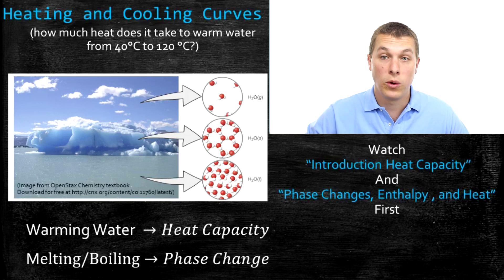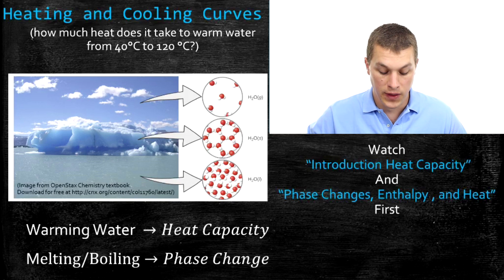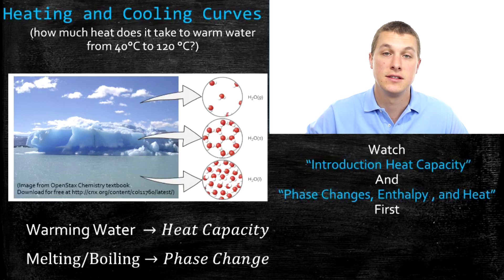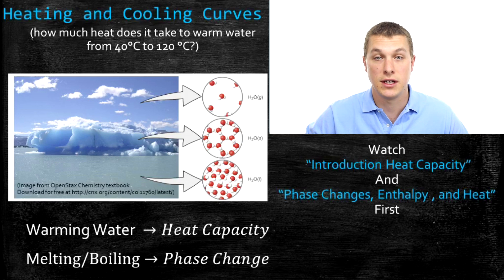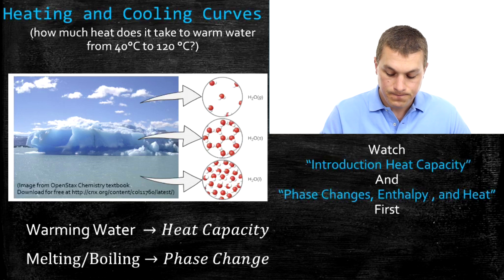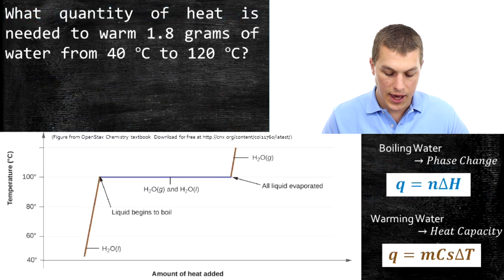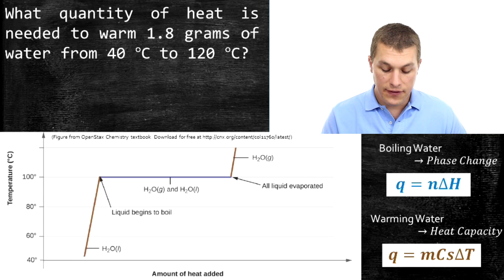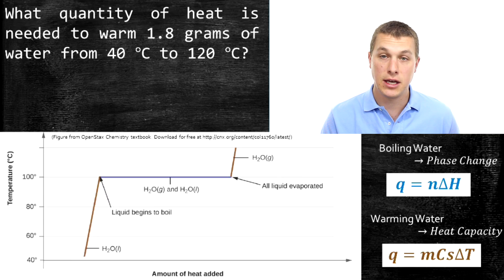The main thing we're going to do in this video is do a calculation where we add up the heat needed to heat up water and take it through phase changes. That means we're going to use both heat capacity calculations and phase change calculations. When we warm water, that's the heat capacity part. When we melt or boil the water, that's the phase change part. These have different ways of calculating how much heat is needed or released. Let's take a look at a heating curve.